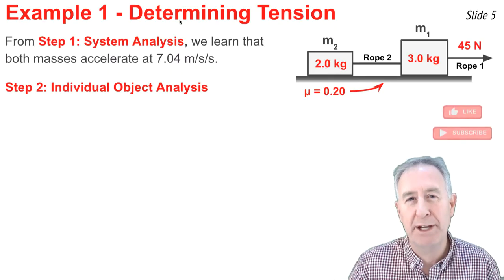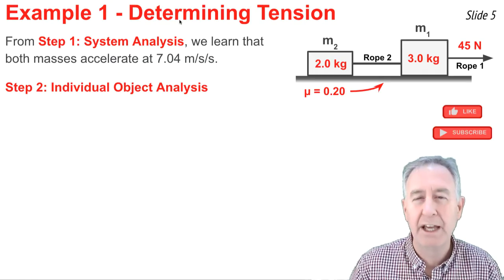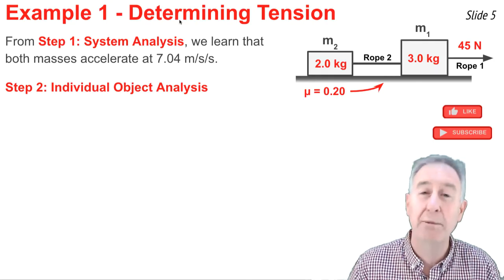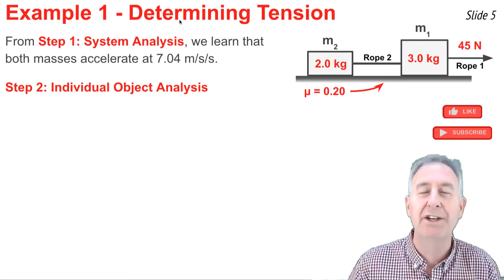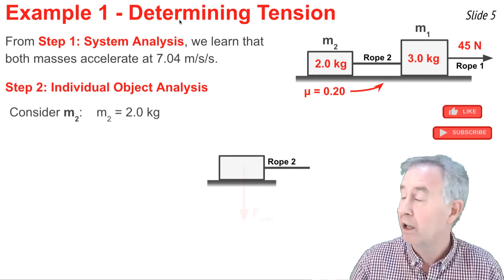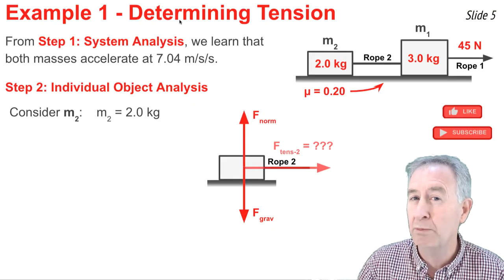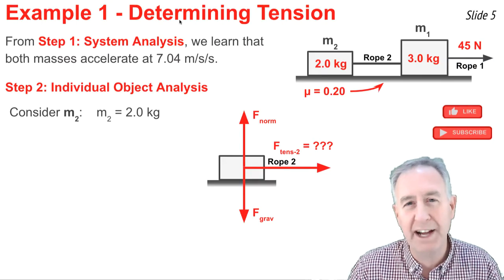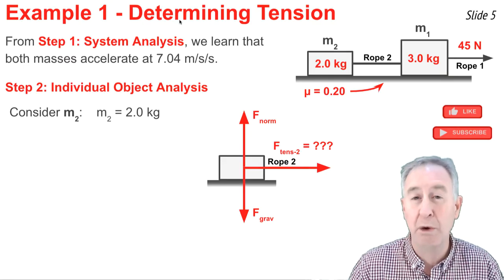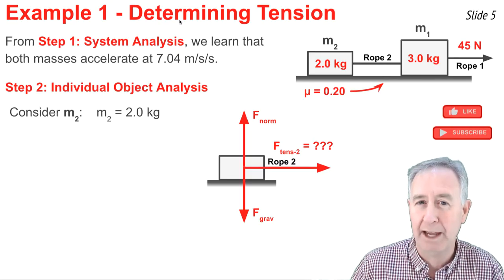Now that I've completed the system analysis to find acceleration, I'll do the individual object analysis to determine the force in rope two. It doesn't matter which object I pick, so I'll pick object two — the 2 kilogram mass. The forces on it are gravity downward, normal force upward, and the tension in rope two pulling it to the right. Note this is not the 45 Newtons — that was the force in rope one applied to object one. There's also a friction force to the left on the 2 kilogram mass.